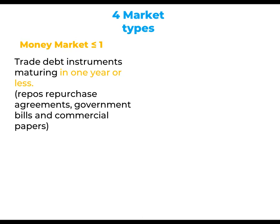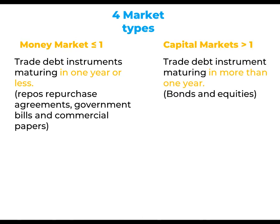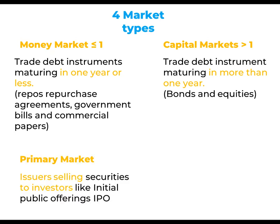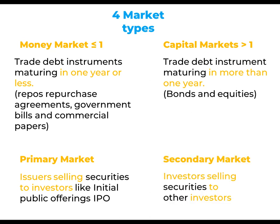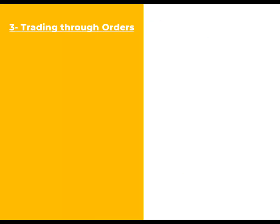Four: market types. Money market — maturing in one year or less, like commercial papers. Capital markets — maturing in more than one year. Primary markets — issuers selling to investors, from issuers to investors. Secondary market — from investors to investors.